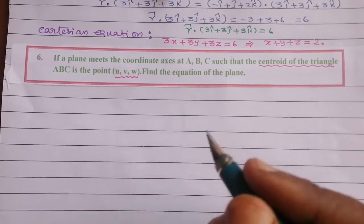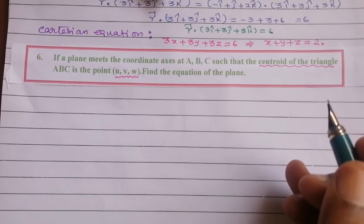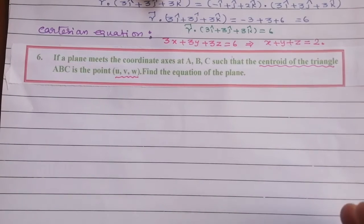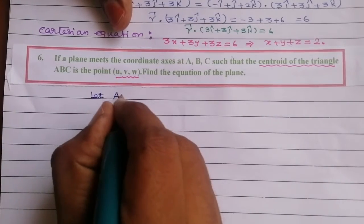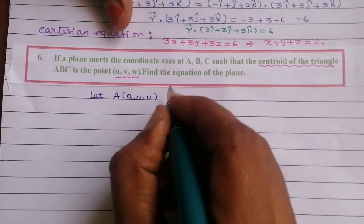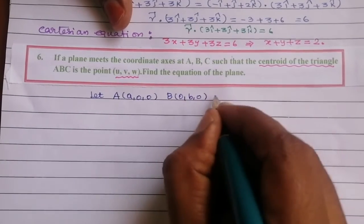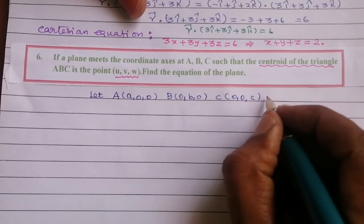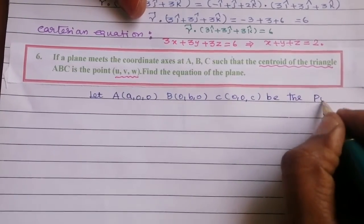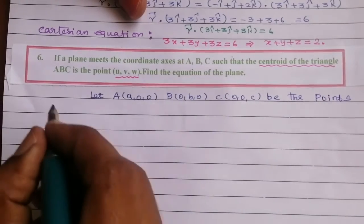We have intercept points: A = (a, 0, 0), B = (0, b, 0), and C = (0, 0, c). Let A = (a, 0, 0), B = (0, b, 0), and C = (0, 0, c) be the points on the coordinate axes.